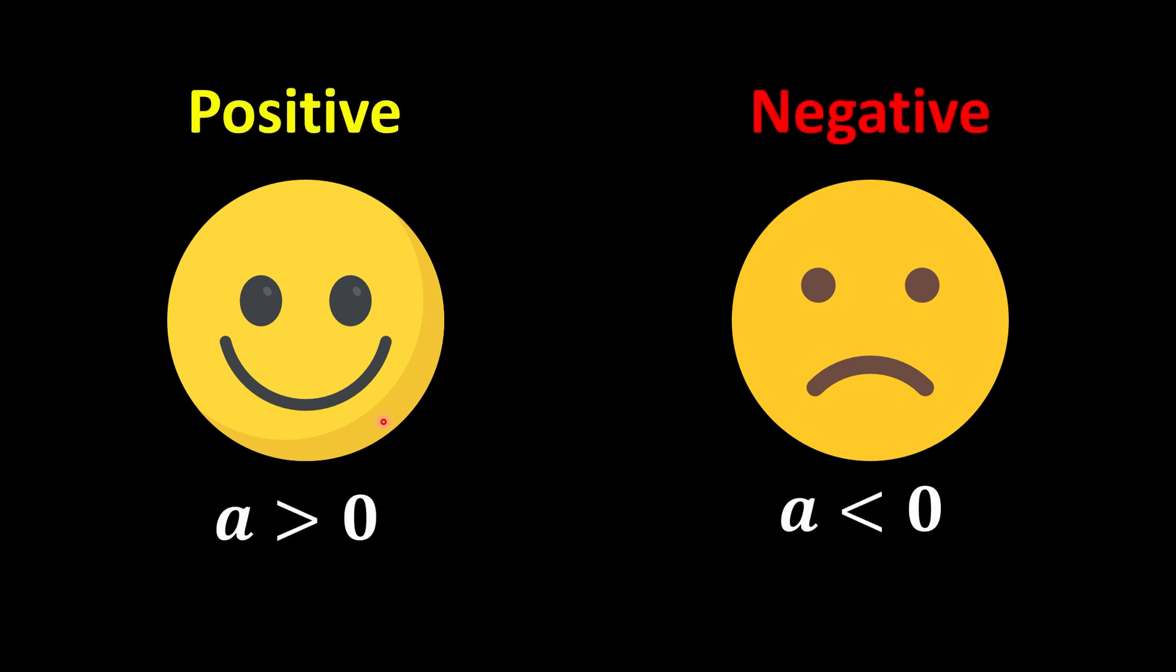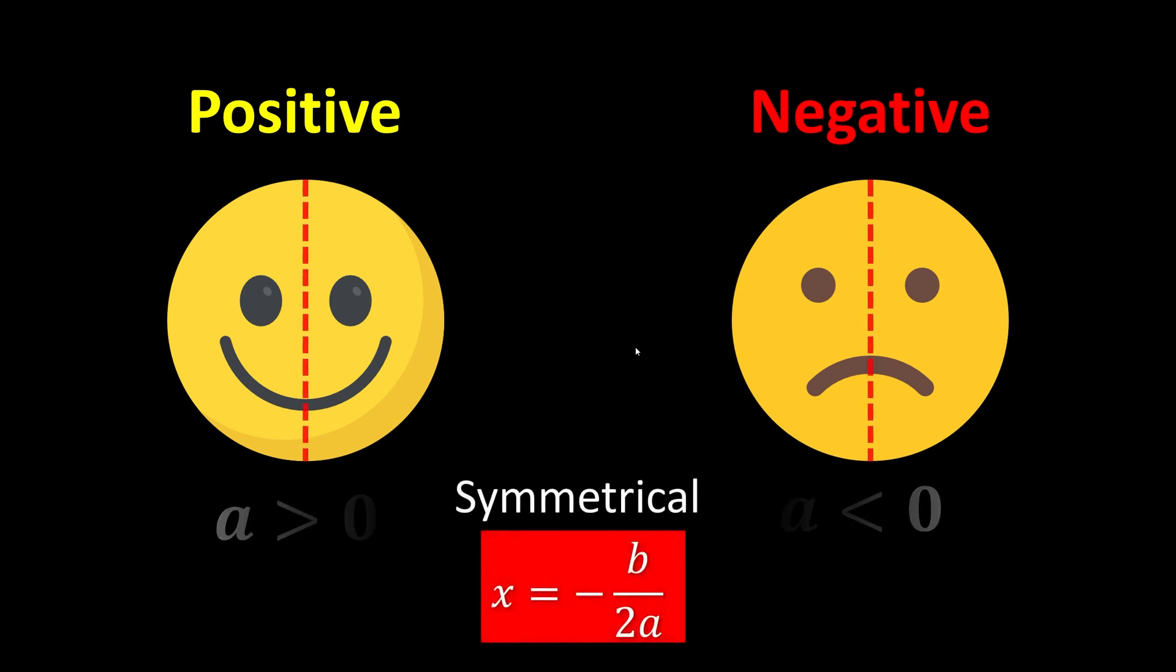Let's discuss more about the shape of the curve. As we mentioned before, when a is positive, we have a curve that looks like a smiley face. When a is negative, we have a curve that looks like a sad face. But there's one more thing - all curves are symmetrical at one point. The equation of the symmetrical line is x equals negative b over 2a. It means it's identical from the left part and the right part.